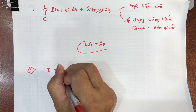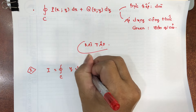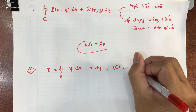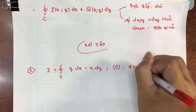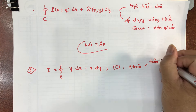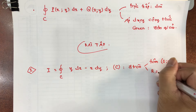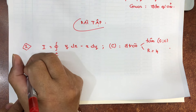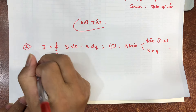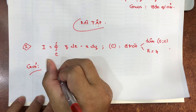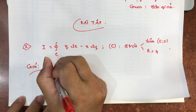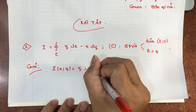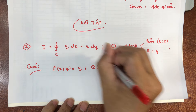Tính tích phân trên đường cong kín C. Ở đây C là đường tròn tâm gốc tọa độ và bán kính bằng 4. Bước thứ nhất chúng ta xác định hai hàm P và Q. Hàm P là y, hàm Q là x.